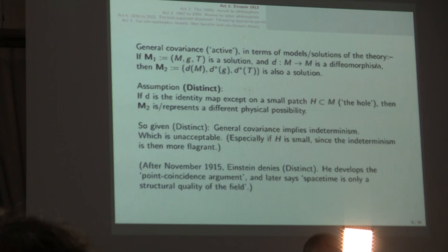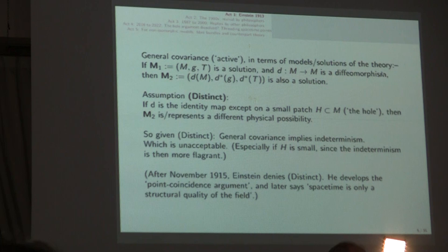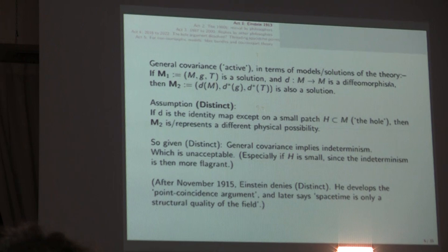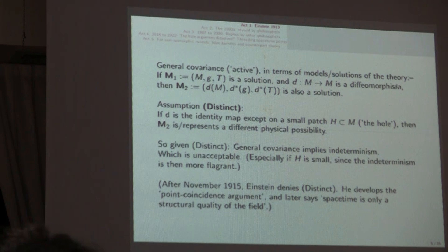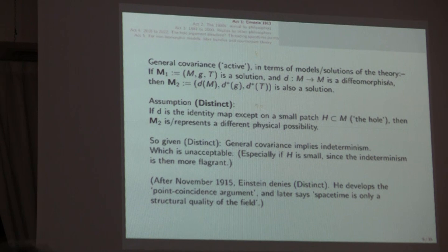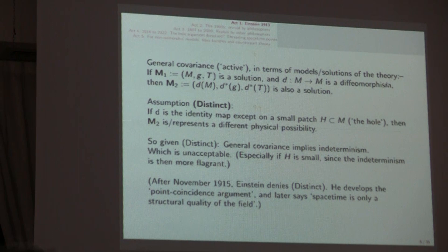If diffeomorphism little d is a diffeomorphism, then the dragged along n-tuple, well, d of M is in fact M, but the dragged along of G, and the dragged along of T, is also a solution. You have redistributed across the various points of manifold N the qualitative profile of material and geometrical properties. Now, Einstein then, in effect, assumes distinct. If D is the identity map, except on a small patch H, then M2 is or represents a different possibility.